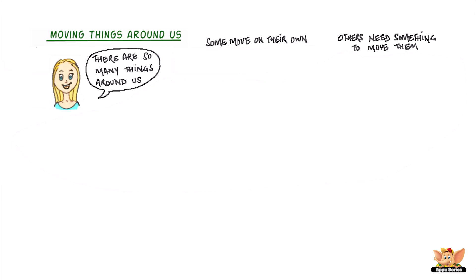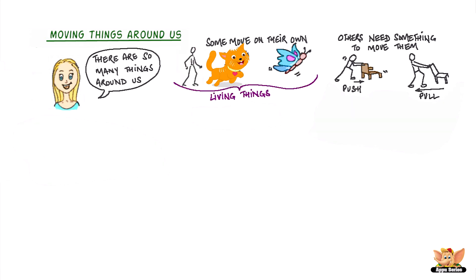For example, you can move on your own and so can a cat or a butterfly. But a desk and a chair move only when you push or pull them. Living things can move on their own, while non-living things need to be pushed or pulled.